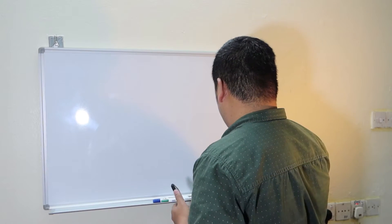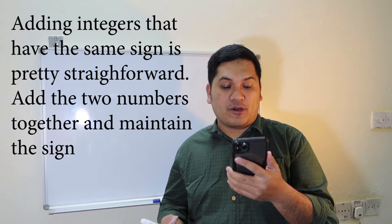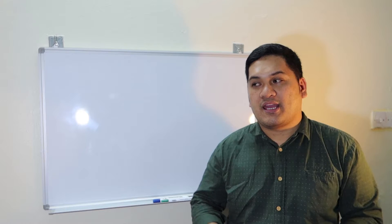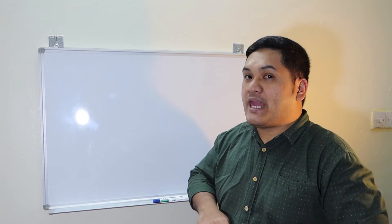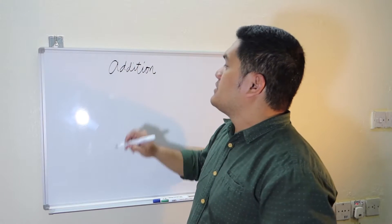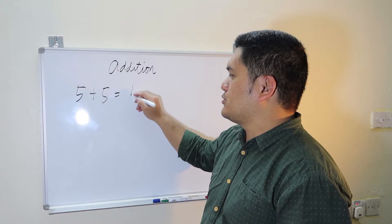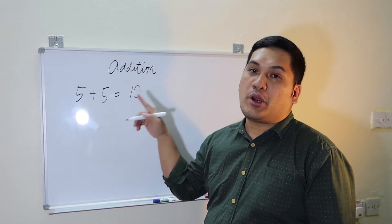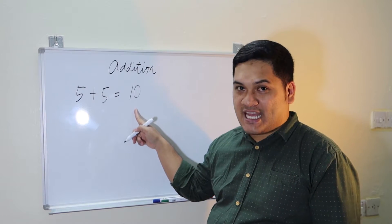Let's begin with addition. In addition, there are two rules. The first rule is: adding integers that have the same sign is pretty straightforward — add the two numbers together and maintain the sign. Meaning to say, if you're going to add positive and positive, or negative and negative, you add the two numbers and maintain the sign. For example, positive 5 plus positive 5 is equal to positive 10. We have two numbers with the same sign, positive and positive — add the two numbers and maintain the sign.